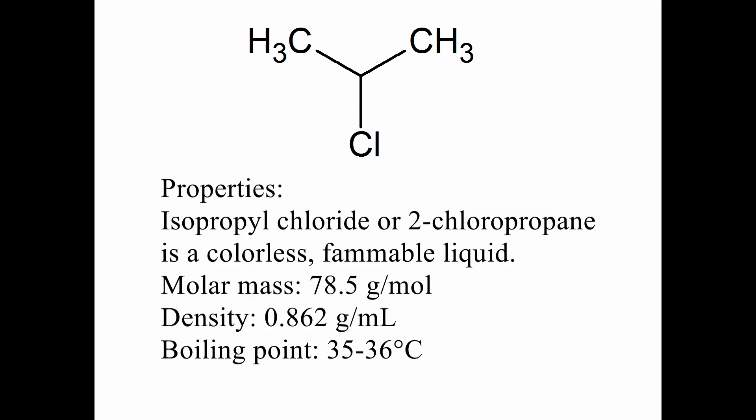Isopropyl chloride, or 2-chloropropane, is a secondary haloalkane. I will be making some because it can be used as an alkylating agent and I want to make an organic compound containing an isopropoxy group.